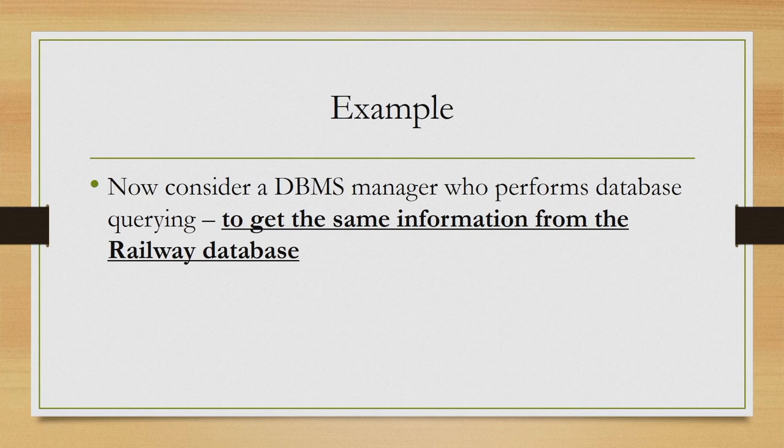Now let us look at it from a different user's point of view — a DBMS manager or a database manager who incidentally performs database querying to get the same information from the railway database. So we have two types of users: one is a traveller or an agent trying to get information about tickets between stations and trains, and another is a database manager who is also capable of getting the same information using the same railway database.